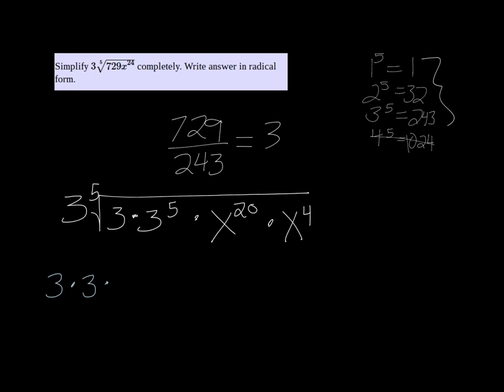And then for exponents on variables, you divide the power by the root. So 20 divided by 5 would be 4. I can take an x to the 4th out. And what's left is 3x to the 4th.